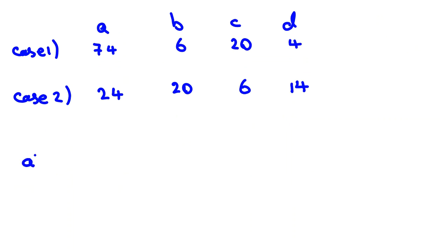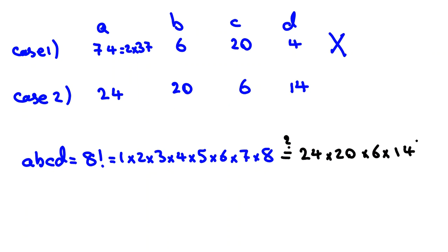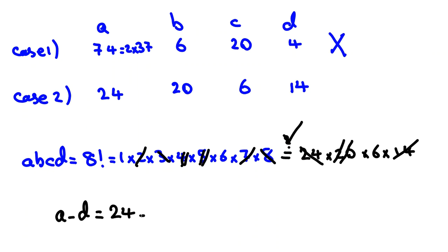From the assumption of the problem, we know A times B times C times D must equal 8 factorial. In Case 1, A = 74 = 2 times 37, which contains the prime factor 37. Since 8 factorial is the product 1 through 8 and does not include 37, Case 1 is invalid. Checking Case 2: 24 times 20 times 6 times 14 — we verify: 14 cancels with 7 and 2; 24 cancels with 3 and 8; 20 cancels with 5 and 4. Both sides equal 8 factorial, so Case 2 is correct. Therefore A minus D equals 24 minus 14, which is 10. The answer is 10.